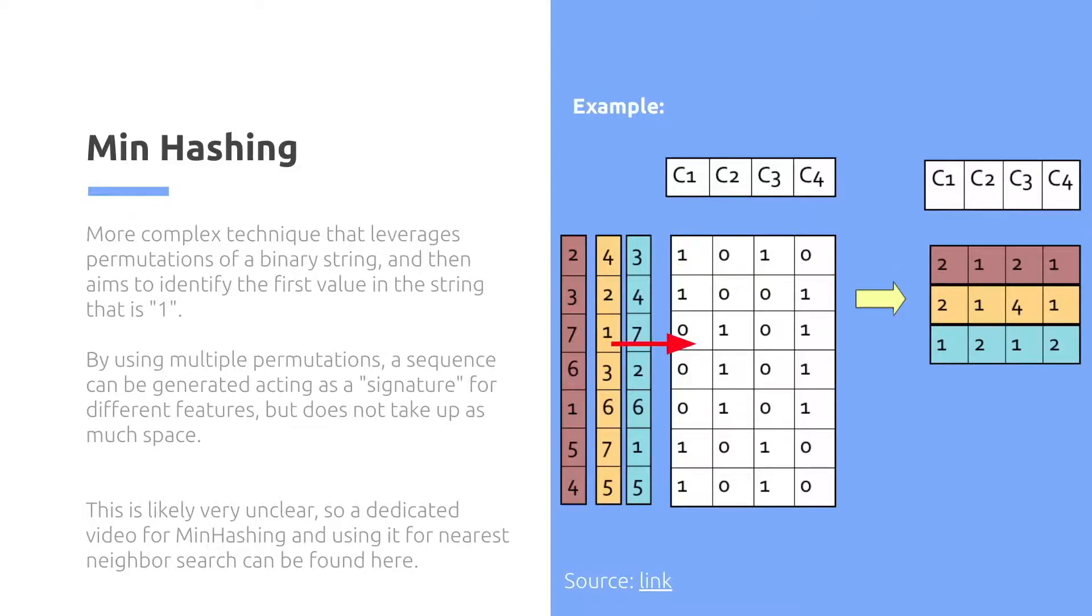Similar for the blue, we repeat the same process. Now we just did the very first document. We continue creating the signature matrix for the second document as well. After you create the signature matrix, this essentially takes all of the different feature vectors that we have for the different documents, which could be a huge, huge size, and compresses it into this simple matrix.